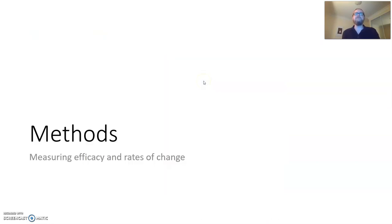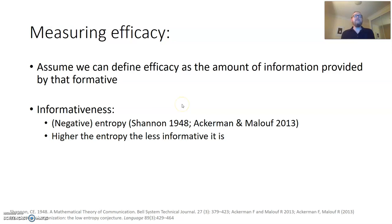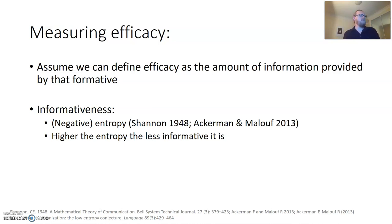For all the morphological formatives from the TAM paradigms of these five languages, I measured them for efficacy and rates of change. Efficacy is perhaps more straightforward — we're talking about communicative efficacy, the ability to precisely communicate information to the hearer. I capture this with the information-theoretic notion of entropy: the higher the entropy, the more uncertainty there is about the value, and therefore the less informative the formative is, which we take to correspond to lower efficacy.